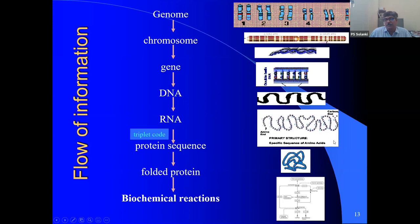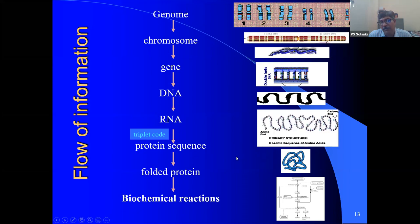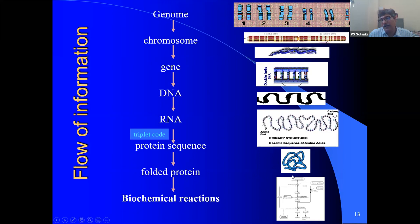The shape and structure of a protein decides its function — this is the protein folding problem, or protein structure prediction. This problem is still open; using machine learning approaches we can achieve around 90–92% accuracy near the real structure, but we haven't developed any method reaching 99%. Once we have the protein structure, we can understand what role it plays in a pathway, and this is how information flows from genome to biochemical reaction.